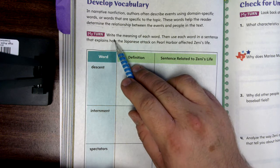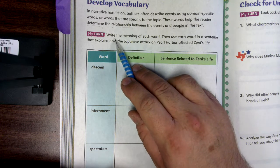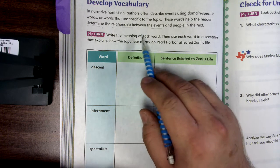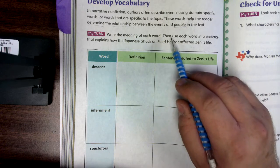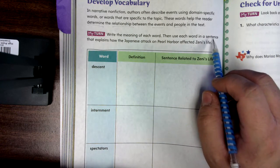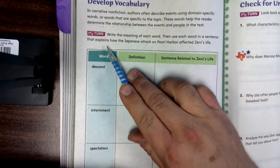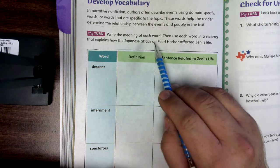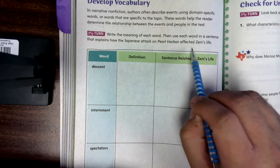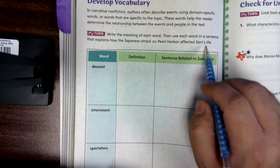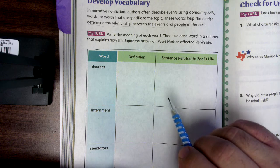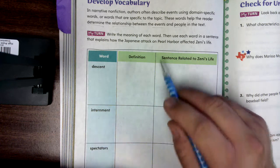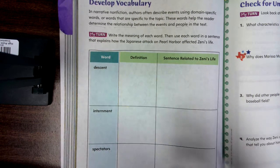Please read the instructions correctly: write the meaning of each word, then use each word in a sentence that explains how the Japanese attack on Pearl Harbor affected Zinni's life.